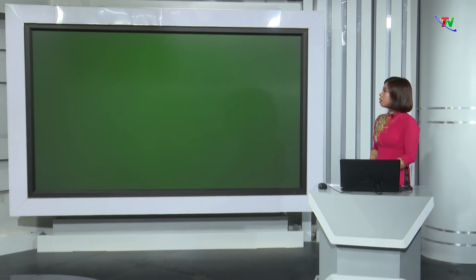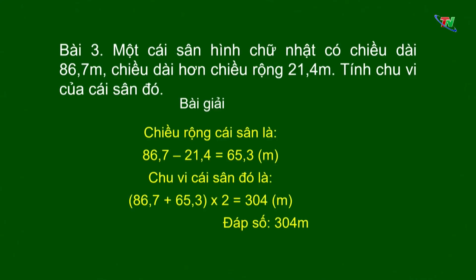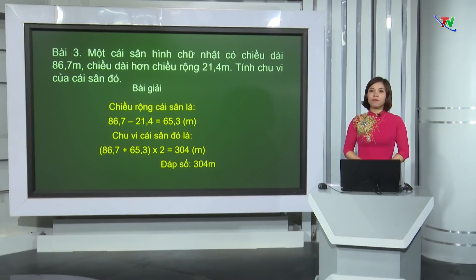Bài 3: Một cái sân hình chữ nhật có chiều dài 86,7m, chiều dài hơn chiều rộng 21,4m. Tính chu vi của cái sân đó. Để tính được chu vi, ta phải biết chiều dài và chiều rộng, vậy ta phải đi tìm chiều rộng trước. Chiều rộng của cái sân là 86,7m trừ 21,4m bằng 65,3m. Biết chiều dài và chiều rộng, ta dễ dàng tính được chu vi của cái sân là 304m. Qua 3 bài tập về nhà, các em được củng cố về phép cộng, phép trừ các số thập phân và các tính chất của phép cộng số thập phân.